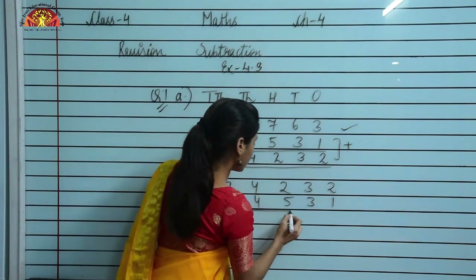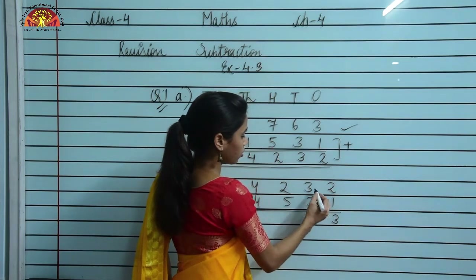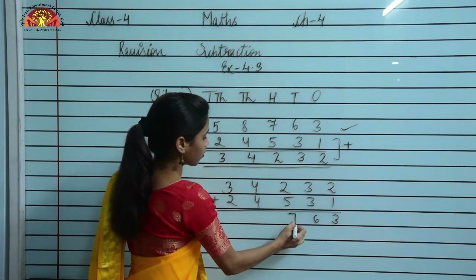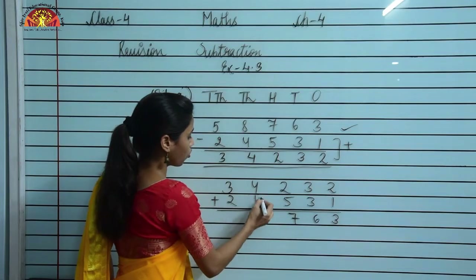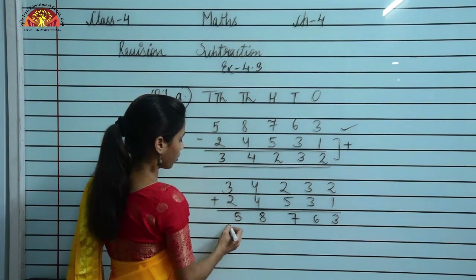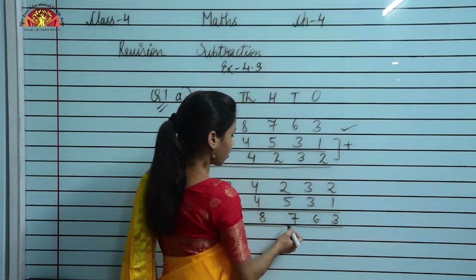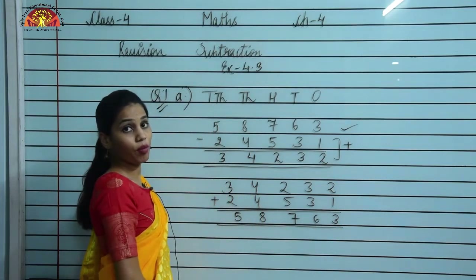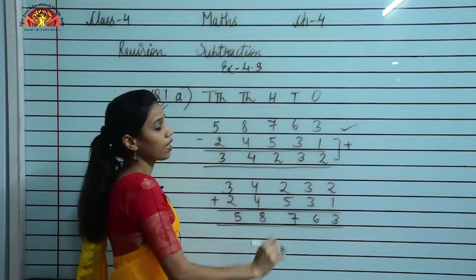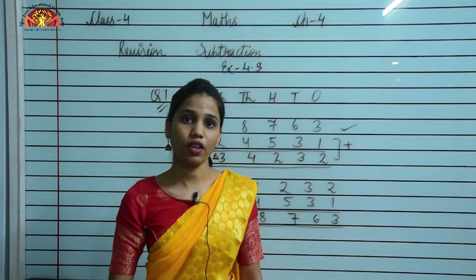Let us do the addition to verify: 2 plus 1 is 3, 3 plus 3 is 6, 2 plus 5 is 7, 4 plus 4 is 8, and 3 plus 2 is 5. Therefore, we get 58,763, which is exactly the original number. That means our subtraction is correct.